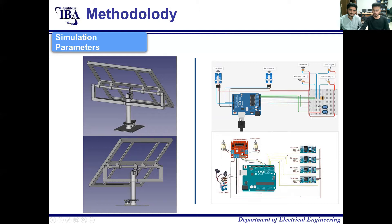You can see there are four LDRs used for sunlight tracking, based on resistivity along with the light striking. Based on that, we have connected an Arduino, which further connects to the motor through H-bridge circuitry. The simulation photo shows the detailed simulation of our complete control circuitry, which is controlled by an H-bridge motor driver.